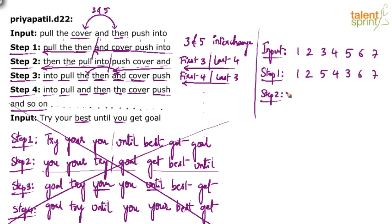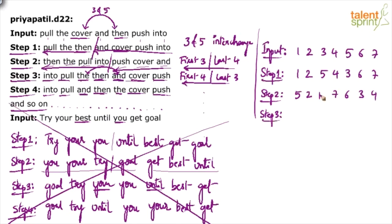This smart method assumes there are 5 questions; if there's only 1 or 2, it may be lengthy, but usually there are 5. In step 2, the first 3 and last 4 are reversed: 1, 2, 5 becomes 5, 2, 1 and 4, 3, 6, 7 becomes 7, 6, 3, 4. Then step 3 — first 4 and last 3: 5, 2, 1, 7 becomes 7, 1, 2, 5; and 6, 3, 4 becomes 4, 3, 6.